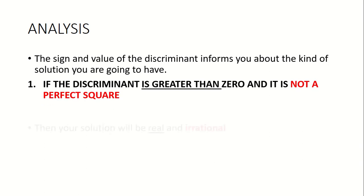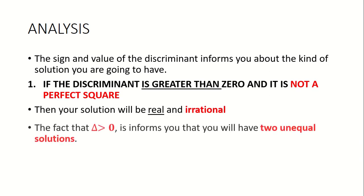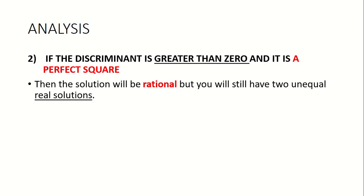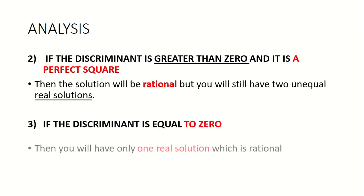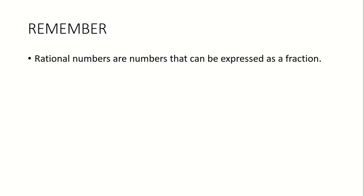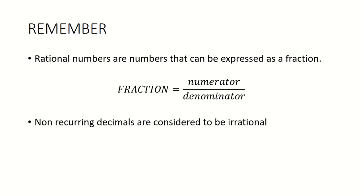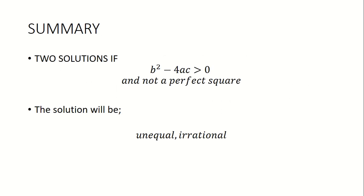The sign and value of the discriminant informs you about the kind of solution you are going to have. Note that rational numbers are numbers that can be expressed as a fraction — a fraction must have a numerator and a denominator. Non-recurring decimals are considered to be irrational, while recurring decimals are considered to be rational.